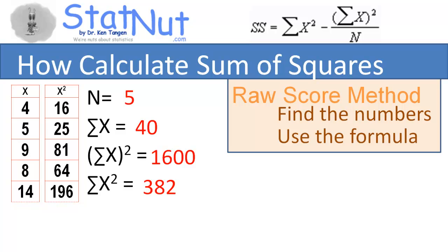Now we have all the numbers. Let's plug them into the formula. The sum of squares equals the sum of the X squareds, column 2, minus the sum of column 1 squared, divided by the number of people in our study.